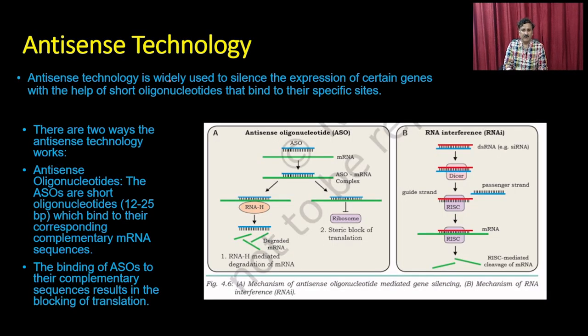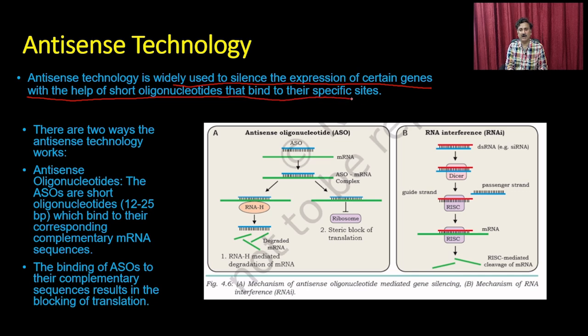Antisense technology is a technique widely used to silence the expression of certain genes with the help of short oligonucleotides that bind to their specific sites. Antisense technology is used to reduce the expression of a particular gene.